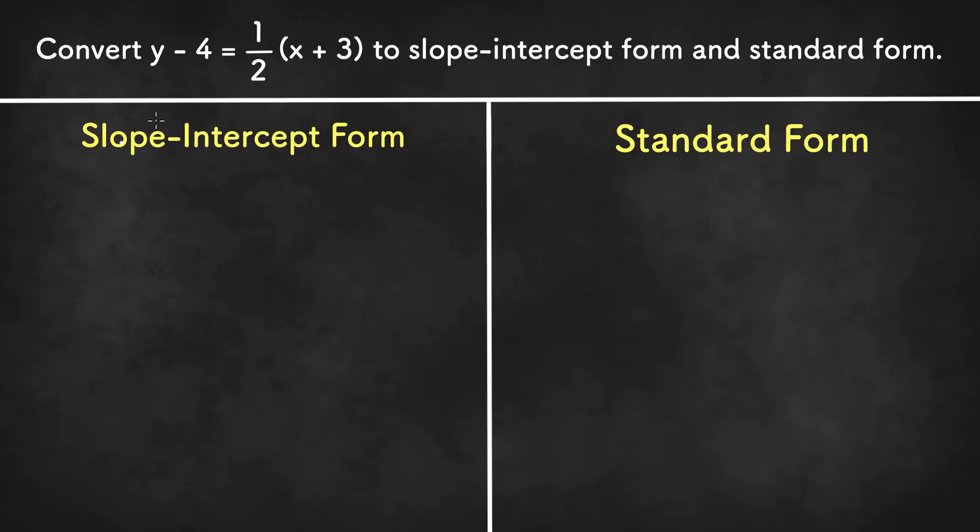So when we're going to convert anything from point-slope form to slope-intercept form, we're first going to be distributing the m, which is 1/2. So if we distribute 1/2, we have 1/2x plus 3/2. Now we need to isolate the y, so we can add 4 to both sides to get y equals 1/2x plus 3/2 plus 4.